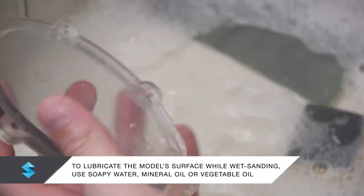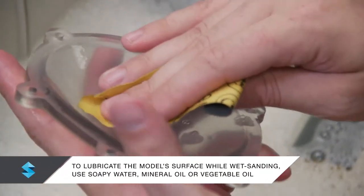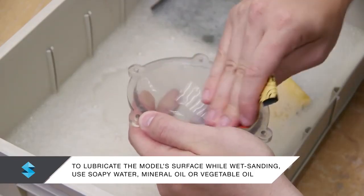To lubricate the model surface while wet sanding, use soapy water, mineral oil, or vegetable oil.